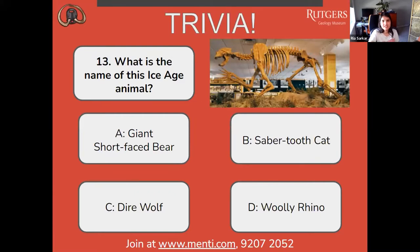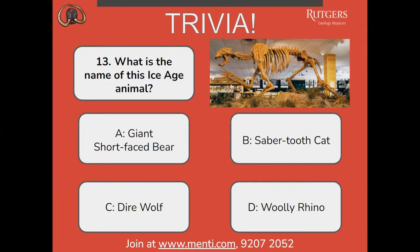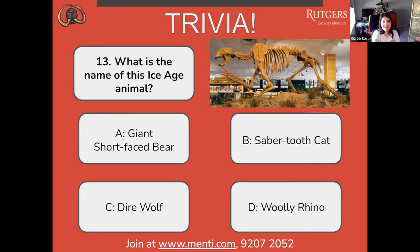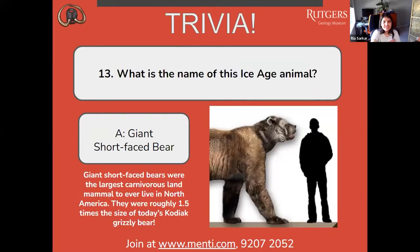Number thirteen: what is the name of this ice age animal? A, giant short-faced bear; B, saber-tooth cat; C, dire wolf; or D, woolly rhino? The correct answer is A, giant short-faced bear. Giant short-faced bears were the largest carnivorous land mammal to ever live in North America. They were roughly one and a half times the size of today's Kodiak grizzly bear.